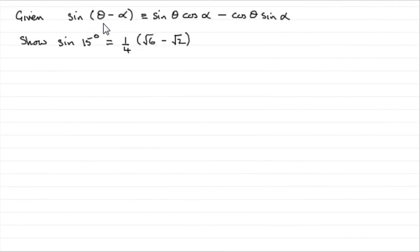Now we're given that sine of theta minus alpha is identical to sine theta cos alpha minus cos theta sine alpha, and asked to show that the sine of 15 degrees is equal to a quarter of root 6 minus root 2. Now how do we do this?